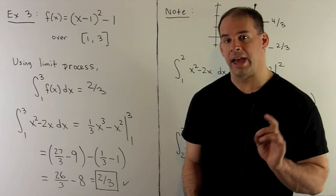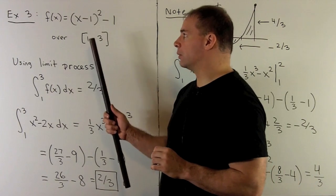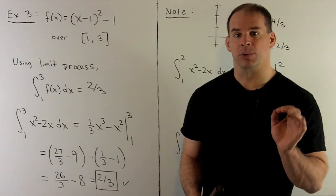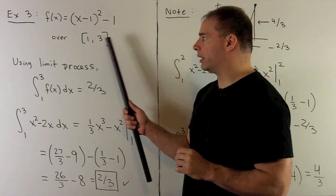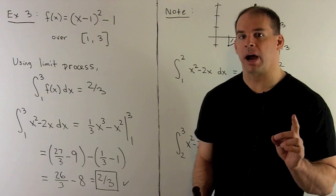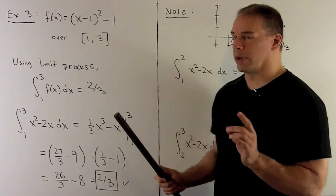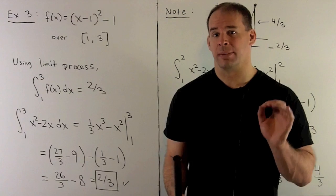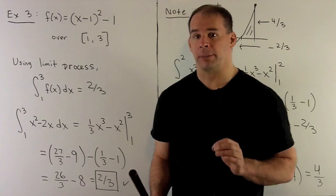Here's an example we can't fit to a familiar shape. We'll have f(x) = (x−1)² − 1, which equals x² − 2x, over the interval from one to three. We've already seen using the limit process that if we take the definite integral, we get negative two-thirds as our net area — some of the function is above the x-axis, some is below.